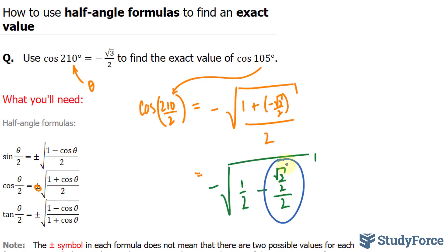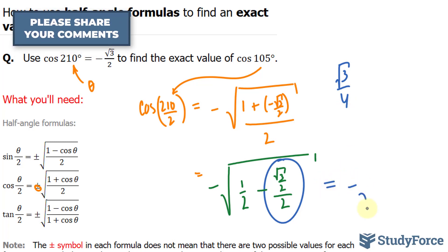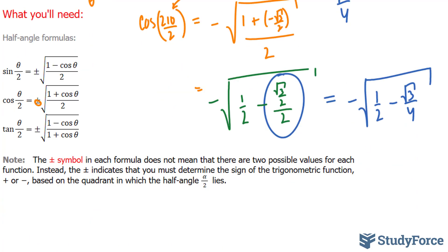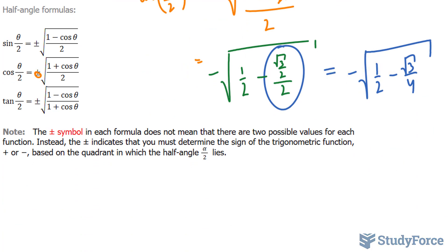This part right here becomes the square root of 3 over 4. And we'll end up with negative square root of 1 over 2 minus the square root of 3 over 4. This can further be combined. We can find a common denominator which is 4.